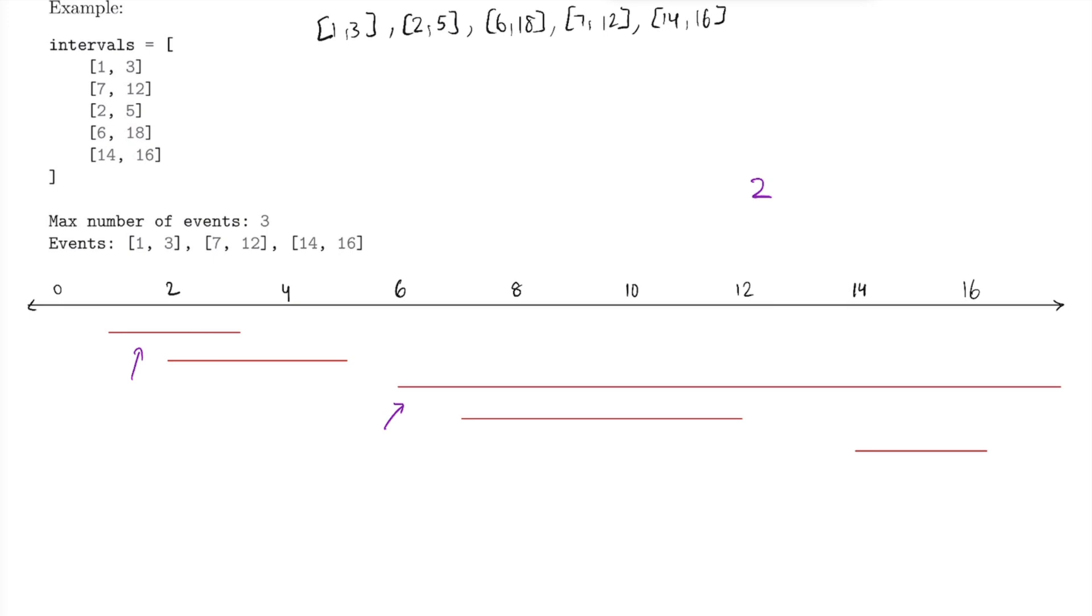However, this isn't the largest number of events we could attend. We could have either attended 1 to 3, 7 to 12, and 14 to 16, or 2 to 5, 7 to 12, and 14 to 16. There are 3 intervals in both. So where did we go wrong?